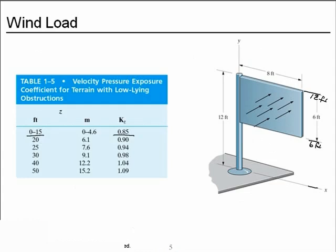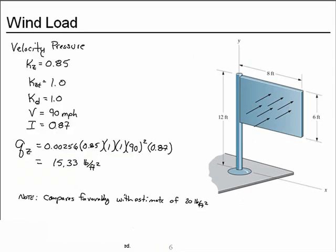To perform more detailed calculations or predictions of the total force resultant, we needed the KZ modifier, which accounts for total height. Since the entire sign is below 15 feet from the ground, the entire sign experiences a KZ of 0.85. We looked at the terrain modifier, which was 1.0 in this case. The directionality modifier, 1.0 in this case, combined with velocity and the importance factor, we got a velocity pressure of about 15 and a third pounds per square foot. That compared well with our estimate of roughly 20, 21 pounds per square foot. So that gave us good confidence.